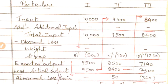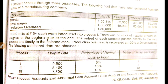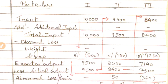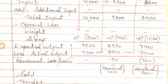For Process 3, the input is 8,400 units from Process 2. Additional input is zero, so total input is 8,400 units. The normal loss is 15% and the scrap rate is given, so this is scrap loss. 15% of 8,400 is 1,260 units. Therefore, expected output for Process 3 is 8,400 minus 1,260 = 7,140 units.